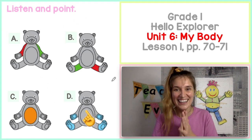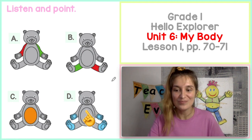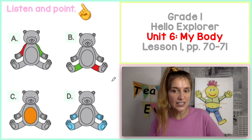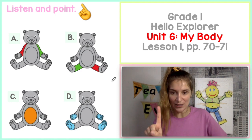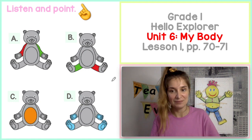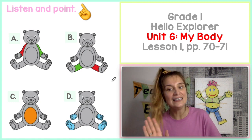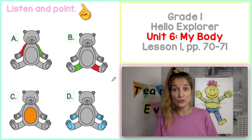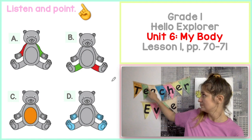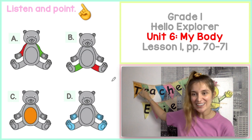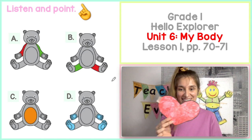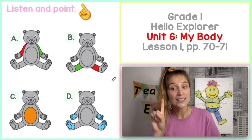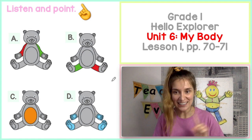Okay, next one. I've got blue hands and blue feet. Which teddy bear has blue hands and blue feet? What color is blue? Blue hands and blue feet — it's D. Did you point correctly? Okay, next one then. I've got one green leg and one red leg. One green leg and one red leg. What colors are they? Green — zielone. Red — czerwone.